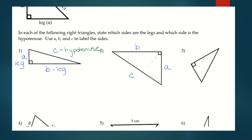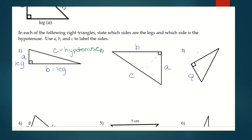Looking at number three, our legs always create a 90-degree angle. I'm going to label this side A and this side B. And then directly across from our right angle is our hypotenuse, C.